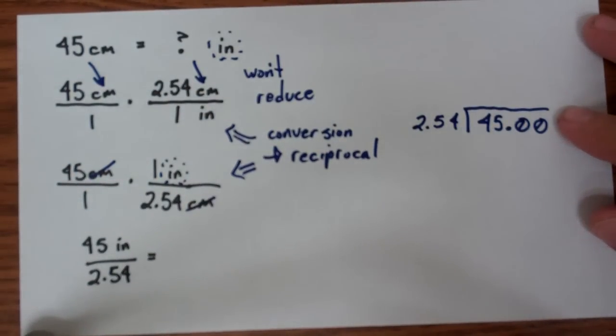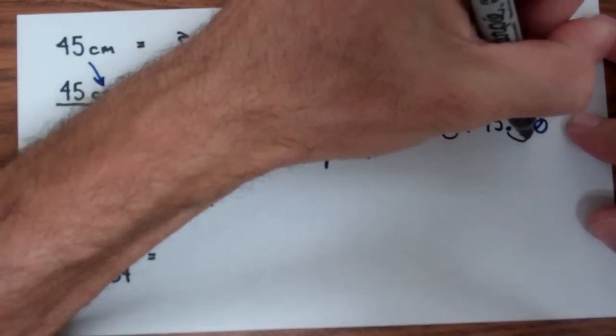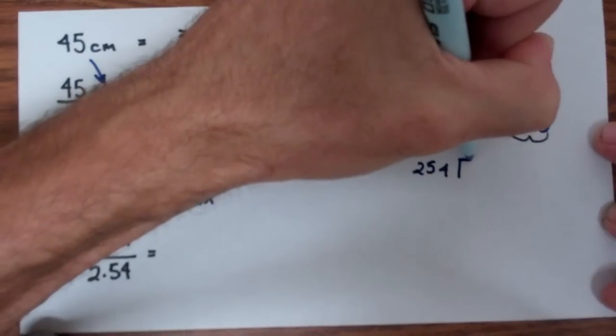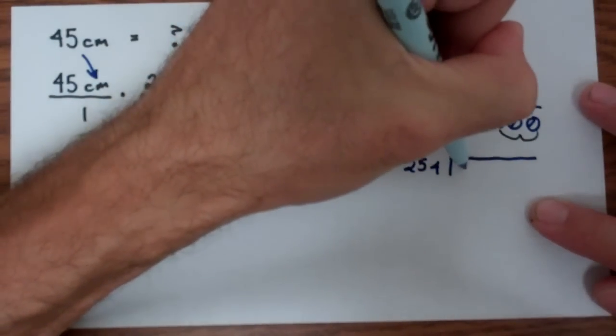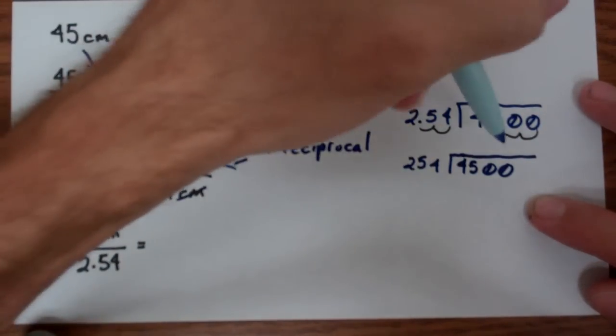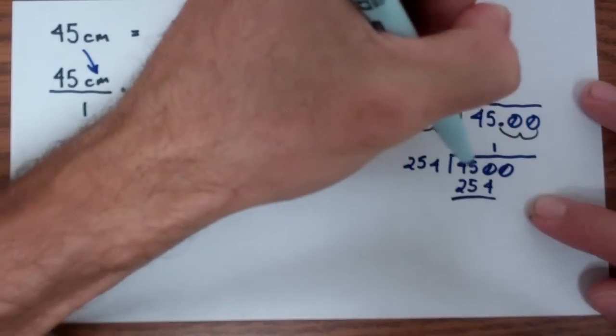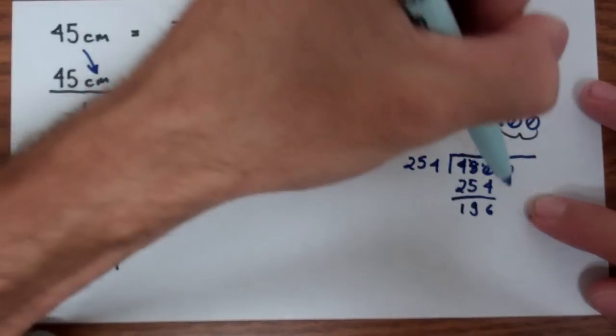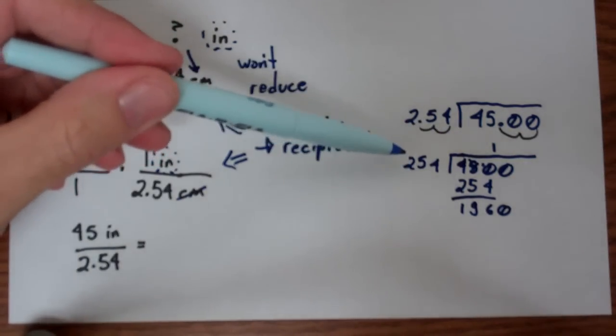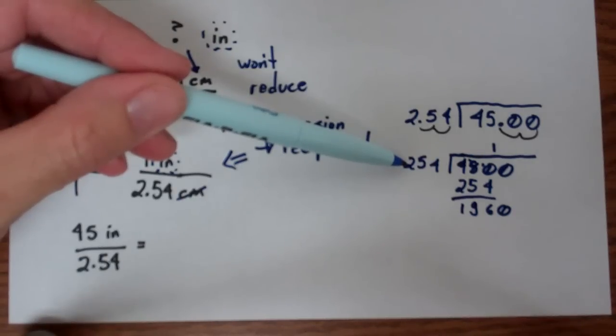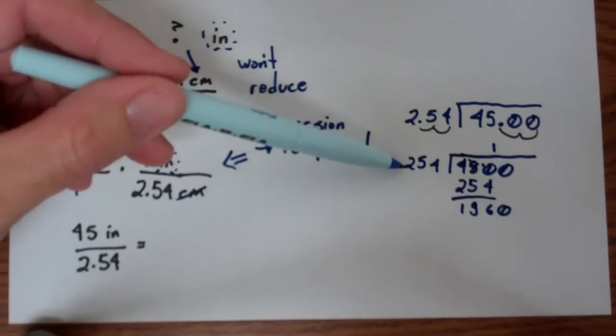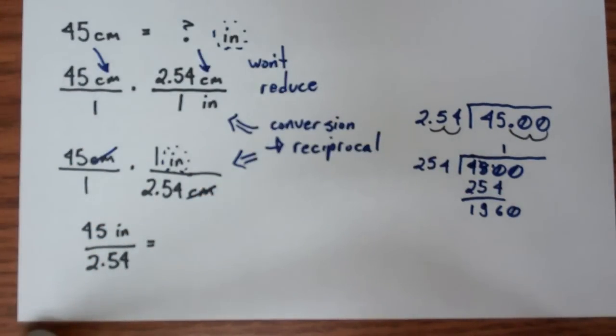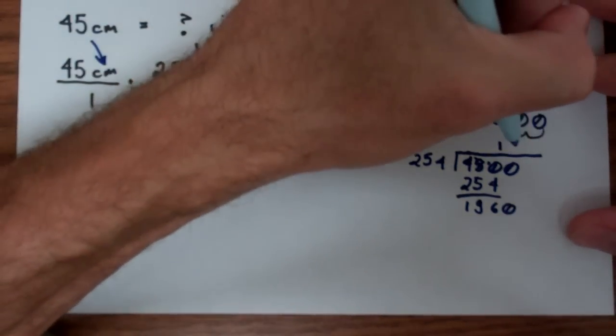We've got to move the decimal place over two values. So the exact division that I really need to do is 254 goes into 45.00. 1 time here, borrow, 14, 9, 3, 1, 196. Now here's where I'm going to use an estimation strategy. If this was 250, two of these would be 500, so four of these would be 1,000. So eight of these would be 2,000. This is a little bit rounded up and this is a little bit rounded down, so instead of using eight, I'm going to try seven.